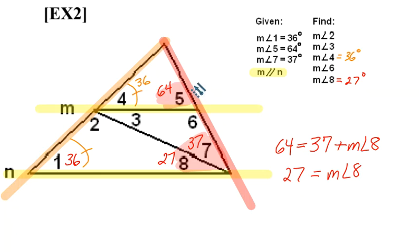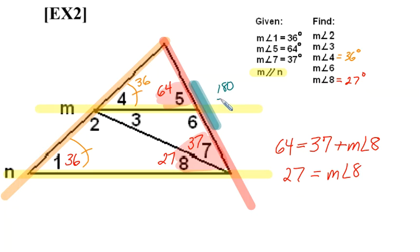Next, let's not overlook that we have a linear pair, with angles 5 and 6 forming a straight line. Since angles 5 and 6 form a straight line, we take 180 minus 64, which gives us 116 degrees — that should be the measure of angle 6.